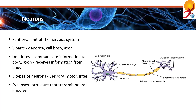Some axons are wrapped in a myelin sheath by specialized glial cells known as Schwann cells. The gap between Schwann cells is known as the node of Ranvier and serves as points along the neuron for generating a signal.